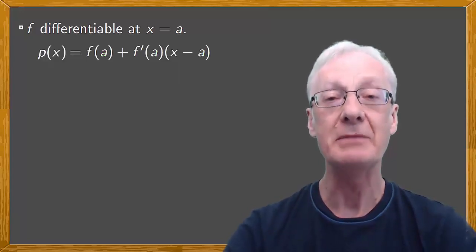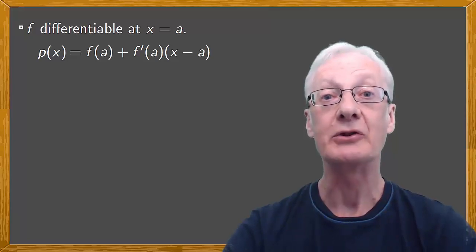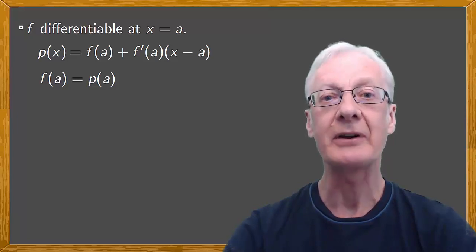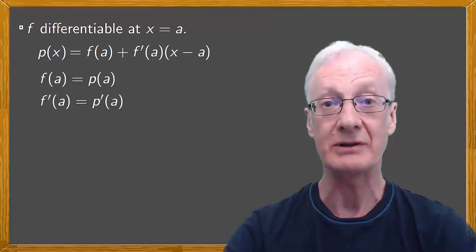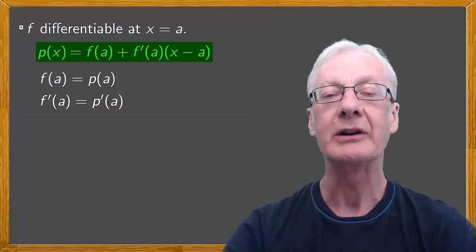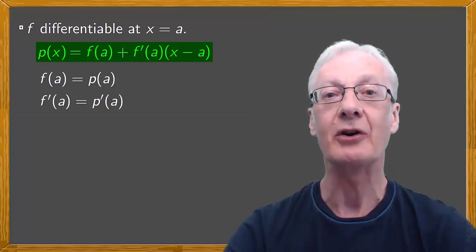This polynomial of degree one that we've obtained approximates the function near a. It's clear that the images of f and of p(x) at a are both f(a). In other words, the images coincide. If we calculate the derivatives of f and of p(x) at a, it's easy to see that both of these coincide as well. So we've found a polynomial of degree one such that its image and its derivative at x equals a coincide with the image and the derivative of f at a. And this is a good approximation to f near x equals a.